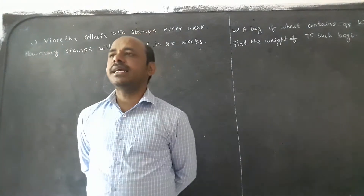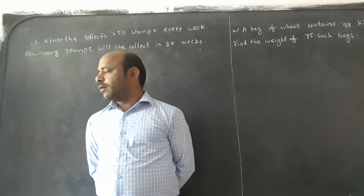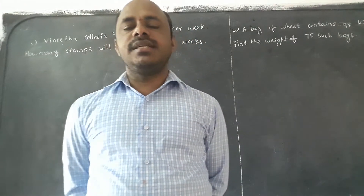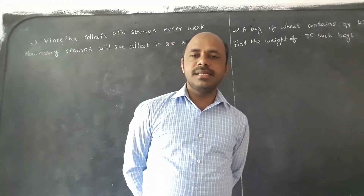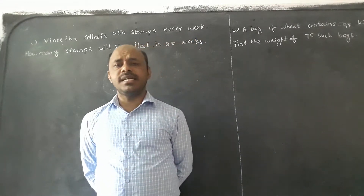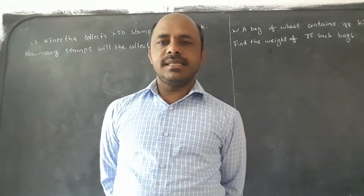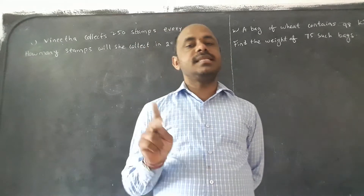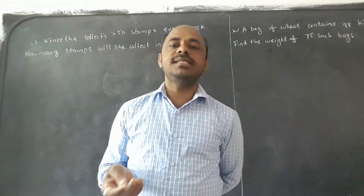How many stamps will she collect in 28 weeks? See children — for example, one person brought two diary meals for a birthday function. If 50 members came and each one brought two diary meals, and 50 persons are there, then we do two into 50, which means 100 diary meals.